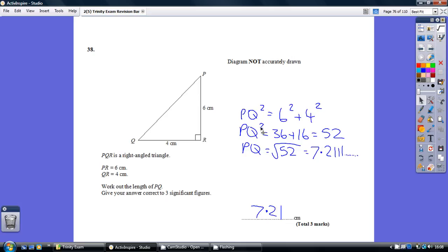So how do we undo the squaring? We square root. So PQ is the square root of 52, which rounds to 7.21 to 3 sig figs.